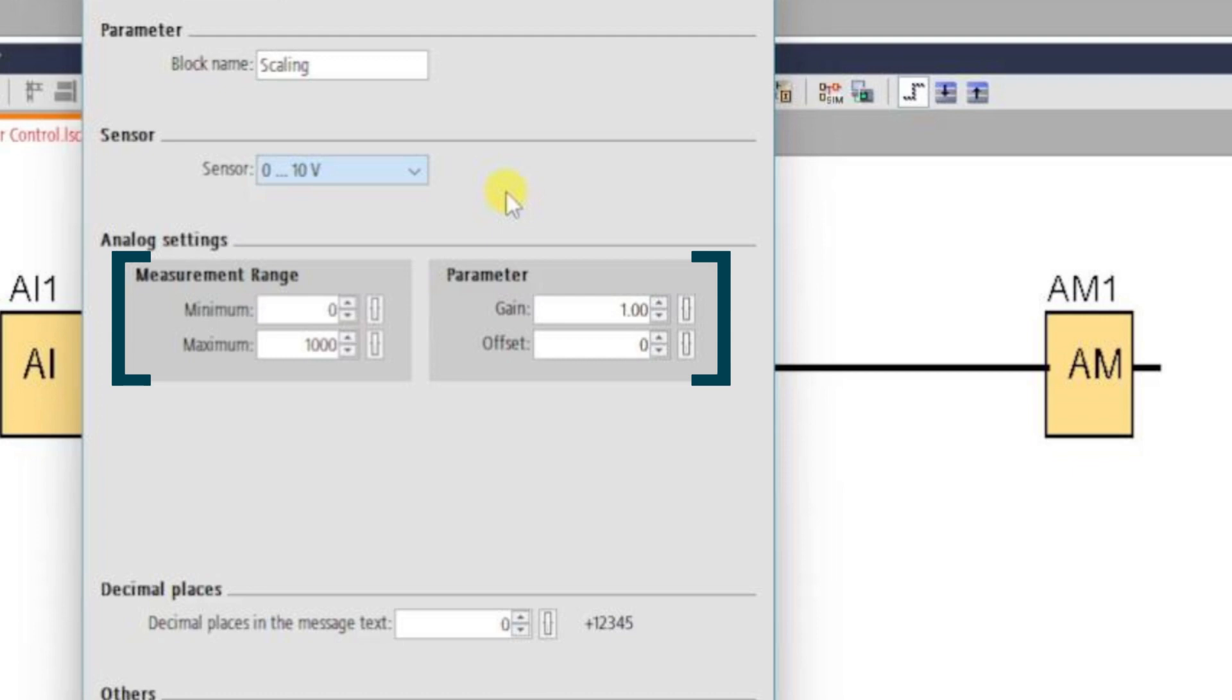We then have to specify two of these four parameters, either the measurement range or the gain and offset. LogoSoft will calculate the other two.